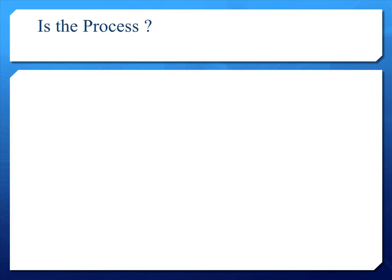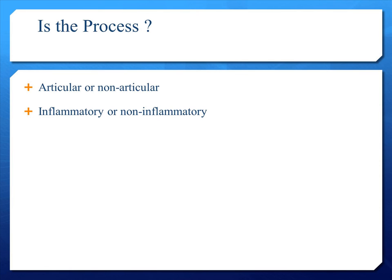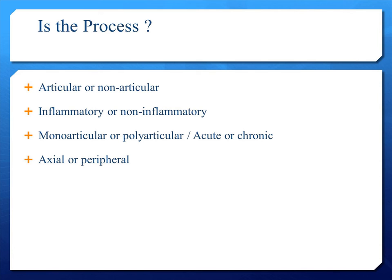First, we have to ask ourselves these five questions. Is the process articular or non-articular? Is the process inflammatory or non-inflammatory? How many joints does it involve — whether it's monarticular or polyarticular? And whether it's an acute process or a chronic process? If it involves the axial or is it mainly a peripheral involvement? And whether they have got systemic involvement or local involvement?